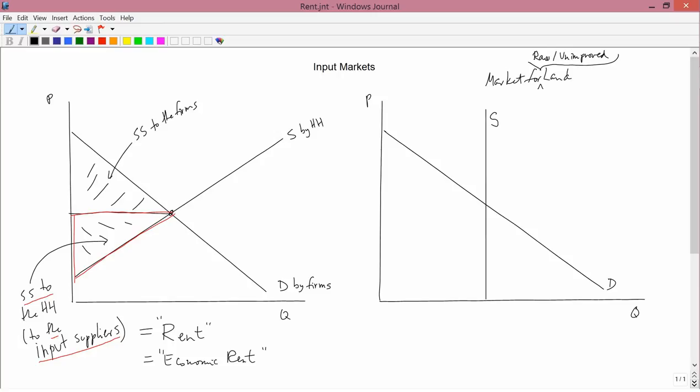Now, think about what that does to this area of social surplus that goes to the input supplier. So I'm drawing it now on the left-hand graph, but what happens if I draw it on the right-hand graph? Basically, what you need to do is think about the left-hand graph.